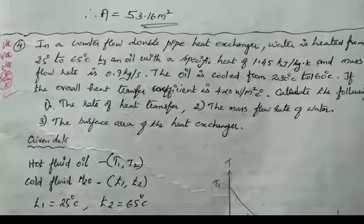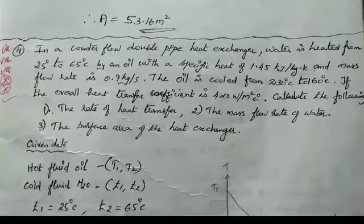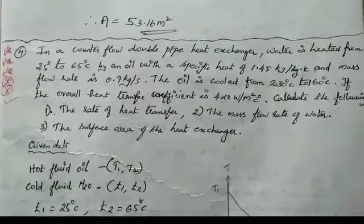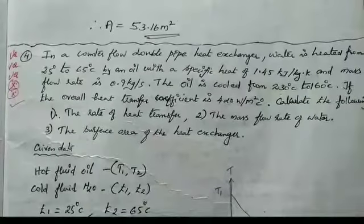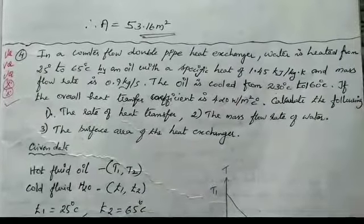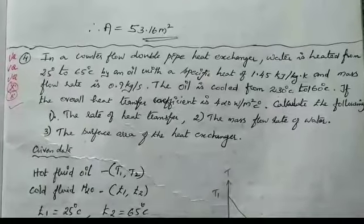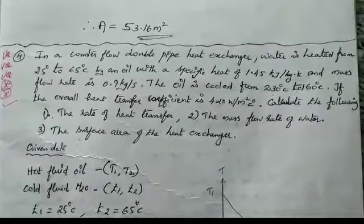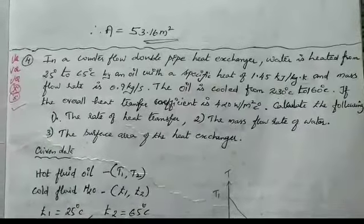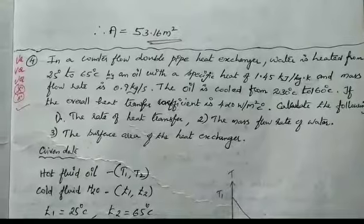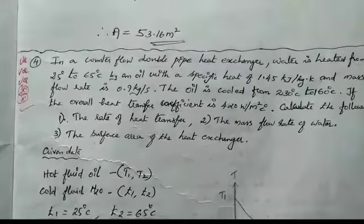Next question: Here is a counter flow double pipe heat exchanger. Water is heated from 25 degree Celsius to 65 degree Celsius by an oil with a specific heat of 1.45 kJ per kg Kelvin and mass flow rate of 0.9 kg per second. The oil is cooled from 230 degree Celsius to 160 degree Celsius. The overall heat transfer coefficient is 420 Watt per m² degree Celsius. Calculate: the rate of heat transfer, the mass flow rate of water, and the surface area of the heat exchanger.